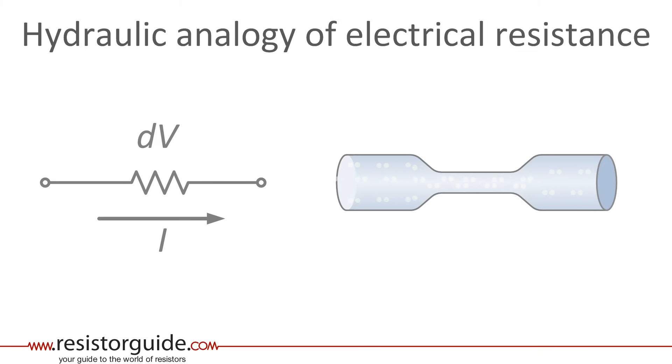We can see this in the water pipe that a pressure drop is created because of the narrow part in the middle. The pressure on the left is bigger than on the right. The resistor has a similar effect. Here a voltage drop is created.